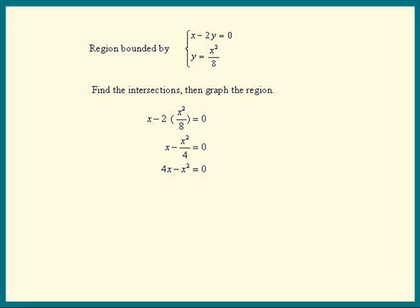Next we can factor out an x. We get x times 4 minus x equals 0. For a product to equal 0, one of the factors has to equal 0. So in this case, either x is 0 or x is 4.